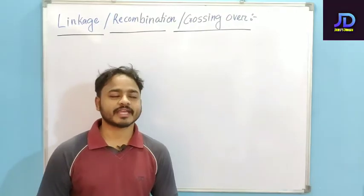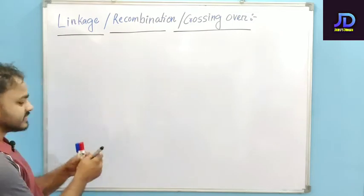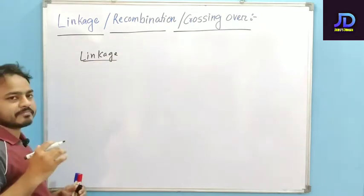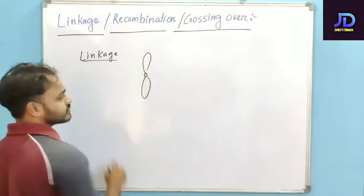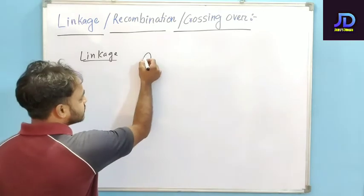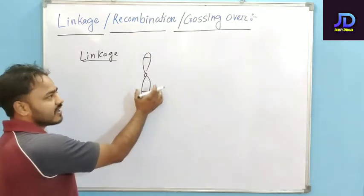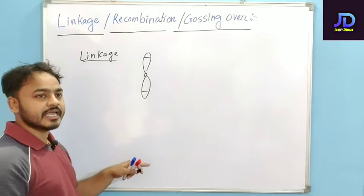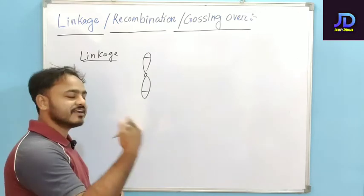Today we will start a new topic: linkage, recombination, and crossing over. Linkage from the name itself means they are very close to each other. If we go to the structure of a chromosome, the genes are present on the chromosomes. When genes are far apart, they will be called unlinked genes. As the distance increases, the linkage decreases.